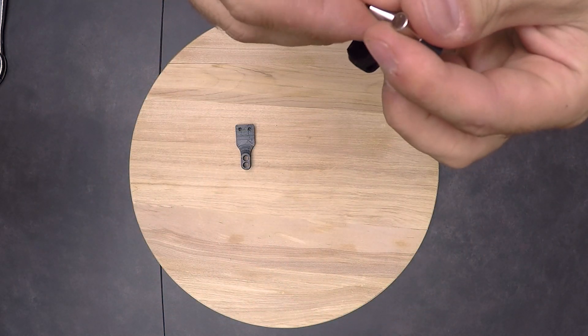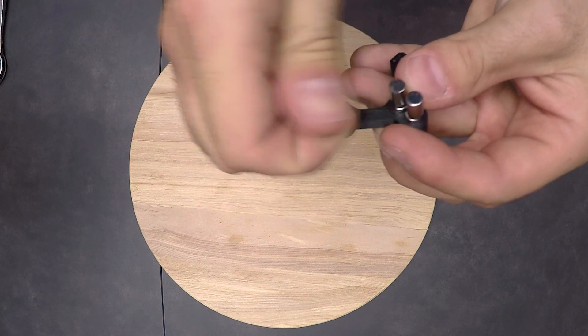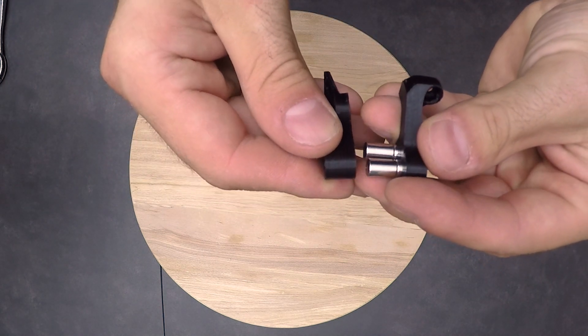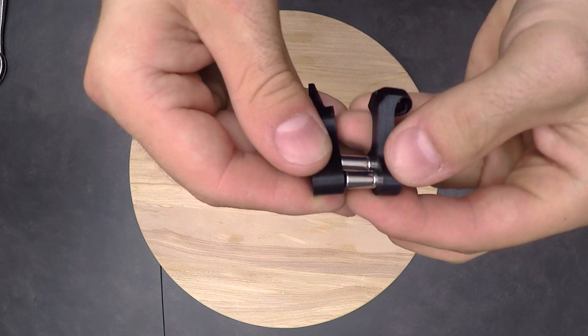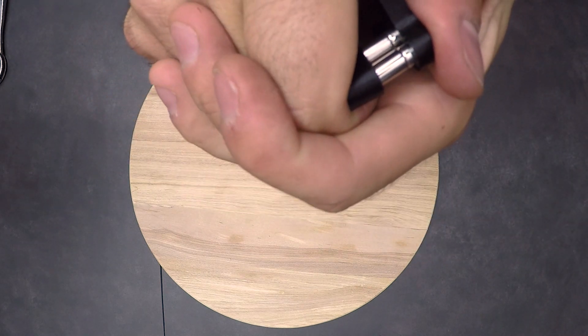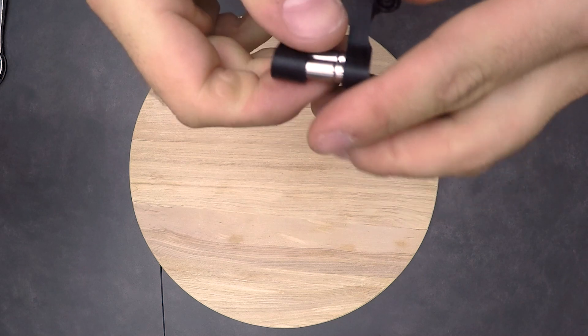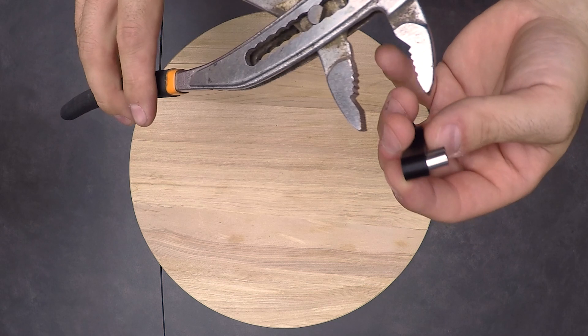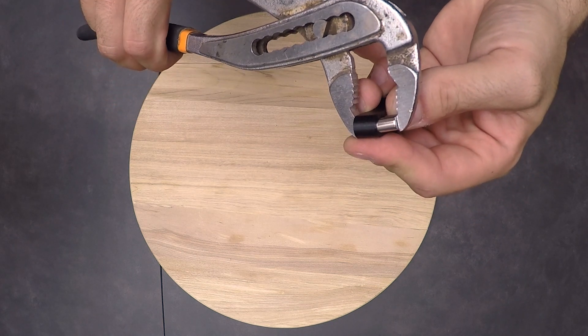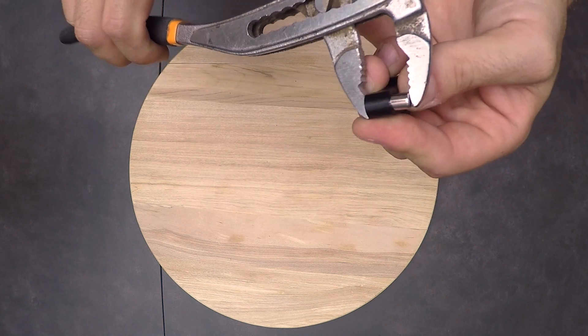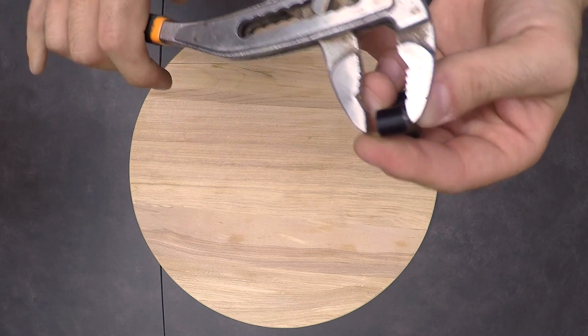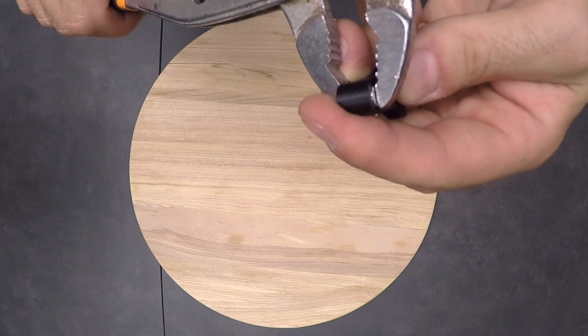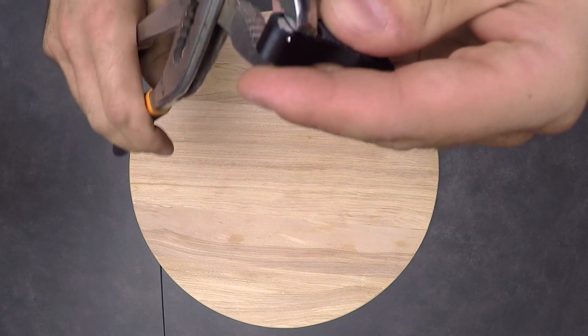Now you can move on to the second 3D printed part. The best way to make sure the magnets are oriented correctly is to do it like this. Press in the magnets. Make sure they are pressed in all the way for this part.